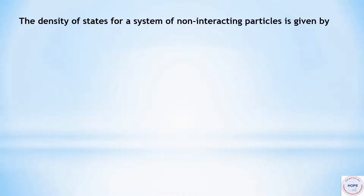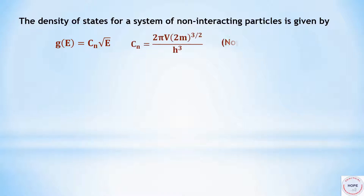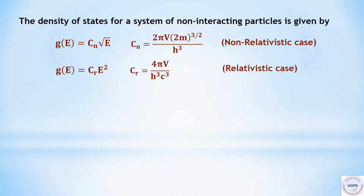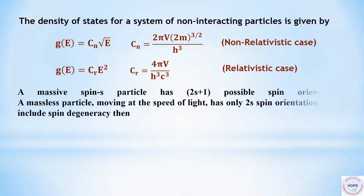The density of states for a system of non-interacting particles is given by this expression: G equal to Cn times square root of energy. Cn is given by this expression for the non-relativistic case. For the relativistic case, G is given by Cr multiplied by square of energy. Cr is 4 pi V by h-cubed c-cubed. A massive spin-s particle has 2s+1 possible spin orientations. A massless particle moving at the speed of light has only 2s spin orientations. If we include spin degeneracy, then the expressions for density of states are these.